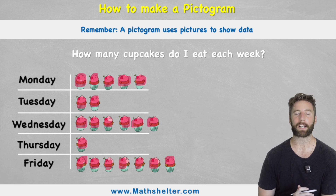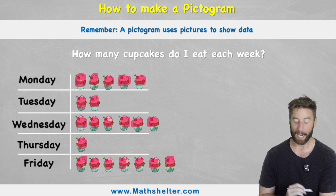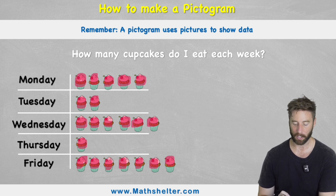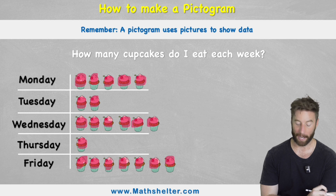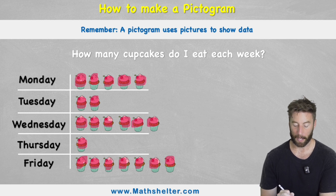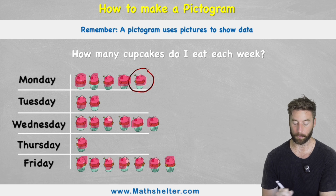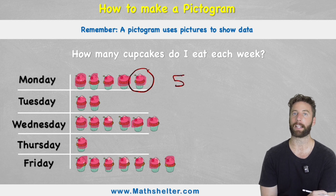So when we're doing a pictogram there is no need to put a number or a tally — all we need to put is these little pictures. But there is an important variation. Because if it doesn't tell you, each of these cupcakes has a value of one, so we know that Monday has five. But sometimes each picture of the cupcake might represent another amount.